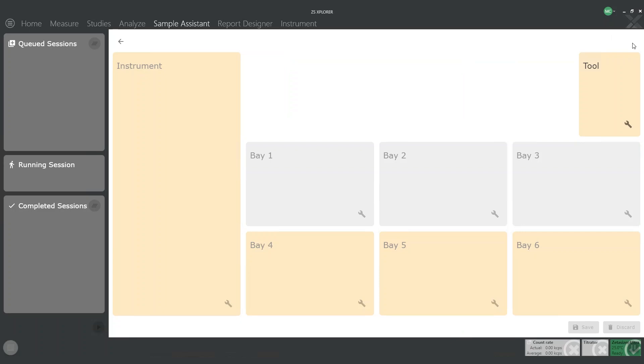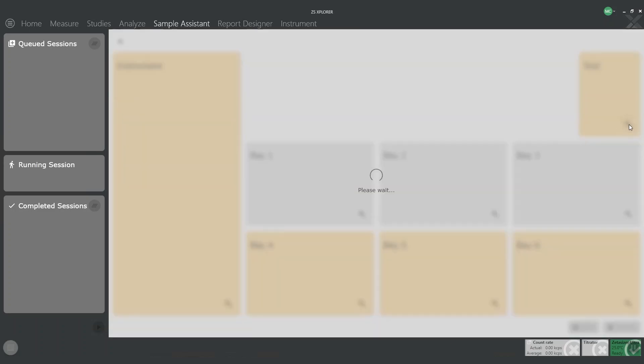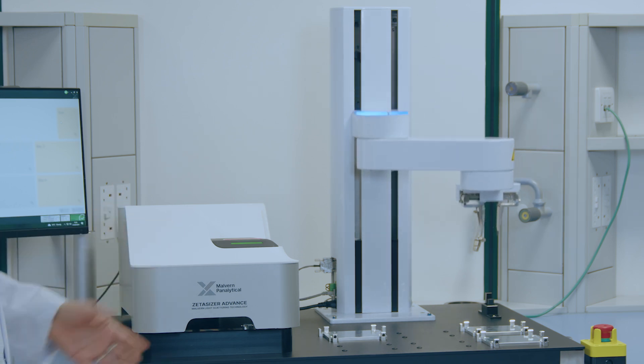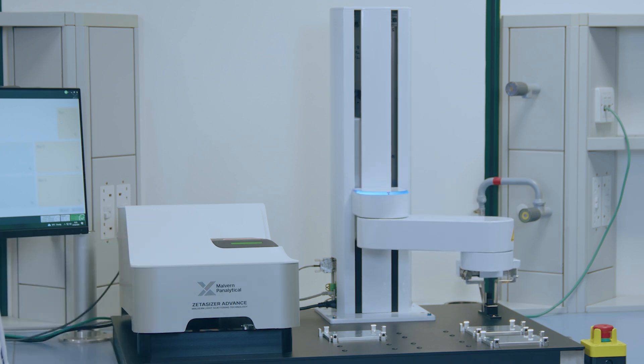The first position that you have to configure is the tool holder position. The reason for this is that the tool holder position serves as master datum for all the other positions that we are going to configure later on. To perform the configuration, simply click the wrench button and the robot arm, as you can see, will start to move and record the position of the tool holder.